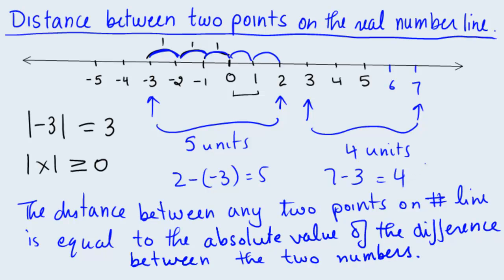Why would I want to take the absolute value? I noticed that to find the distance from 3 to 7, I did 7 minus 3 and got 4. But what if I had done 3 minus 7? That would give me negative 4. The distance between 3 and 7 is 4, so I take the absolute value of negative 4, which equals 4. The same way, I could have done negative 3 minus 2, which equals negative 5. The distance is 5 units, which is the absolute value of negative 5. So this makes sense.